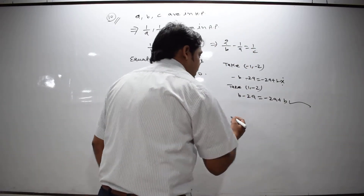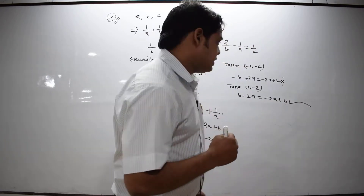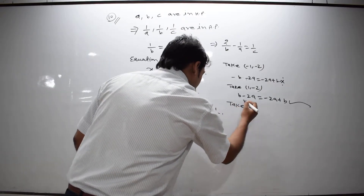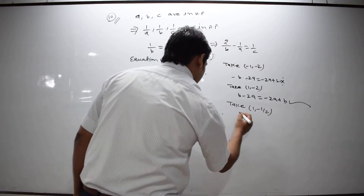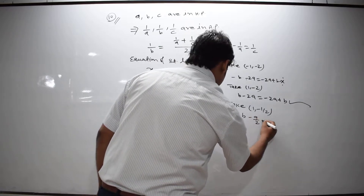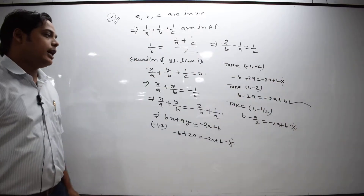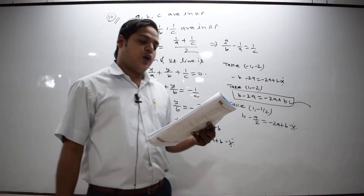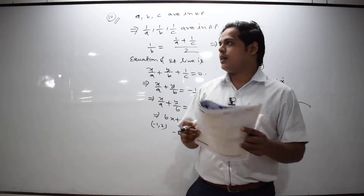We can also check option D to confirm there is not more than one correct answer. Taking the point (1, -1/2): putting x = 1 and y = -1/2 gives -A/2, which equals -2A + B — a contradiction, not equal. So the line only passes through the fixed point (1, -2), meaning option C is correct.